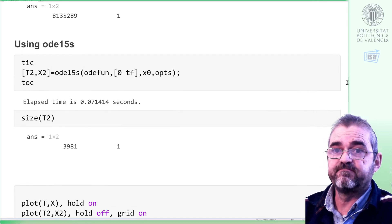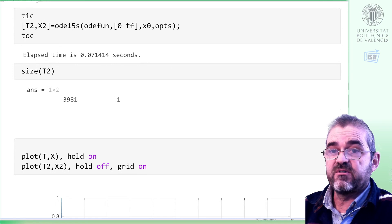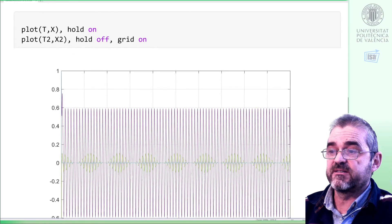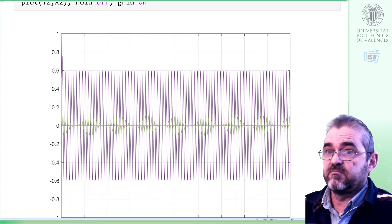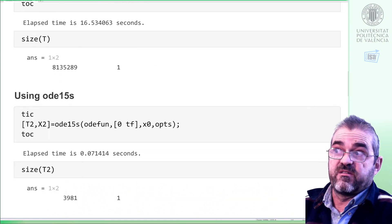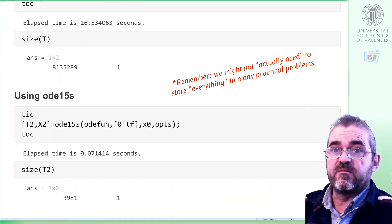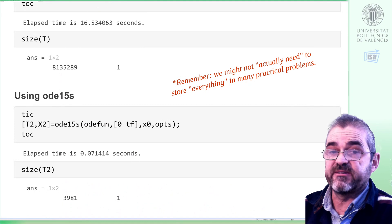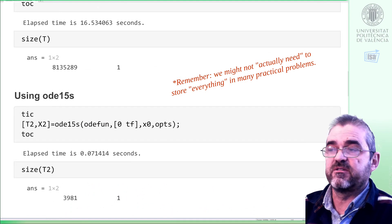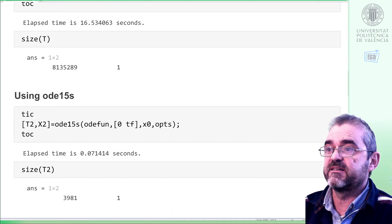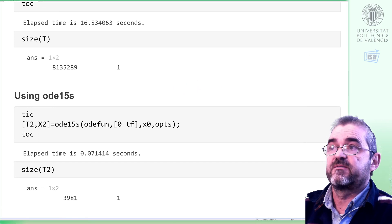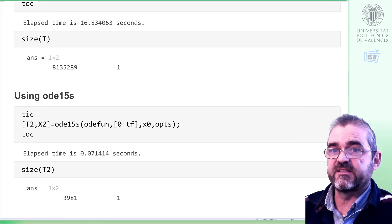Of course, as we take as many points as we need to fulfill the tolerances, simulations are identical. But with the wrong solver, we need about 2000 times more memory to store the simulation result, and we also take 200 times longer. So let us conclude.